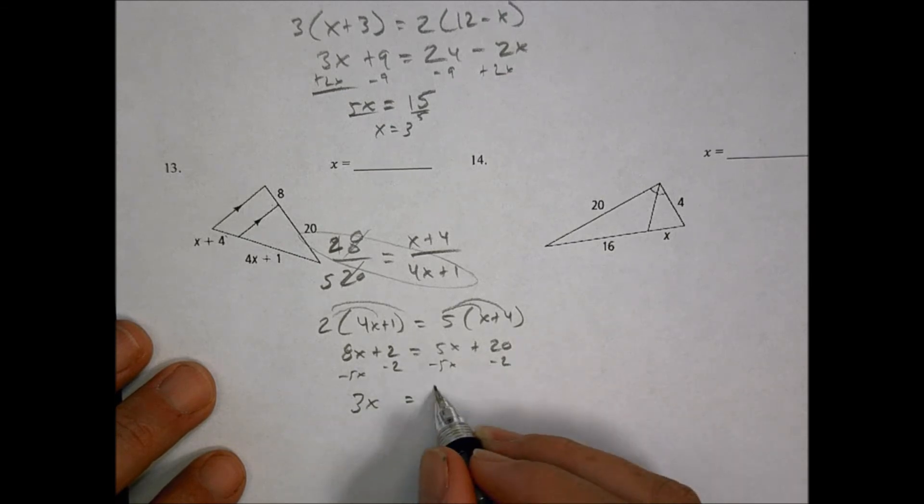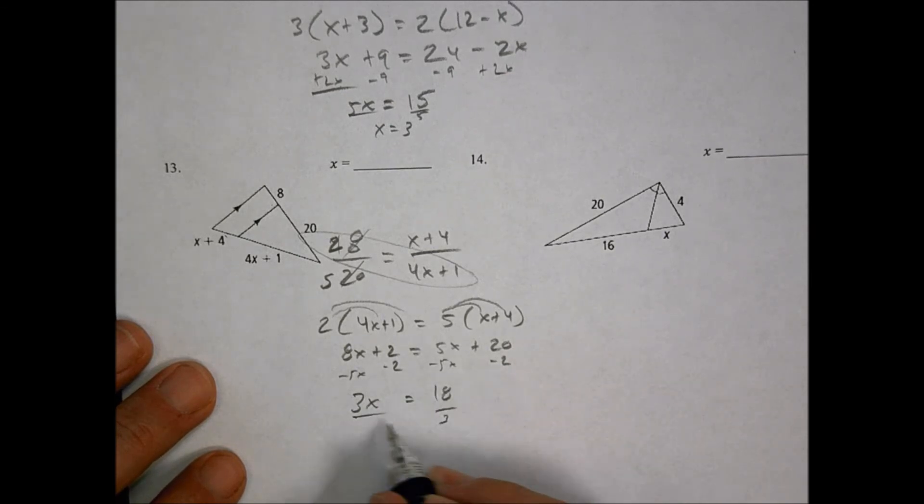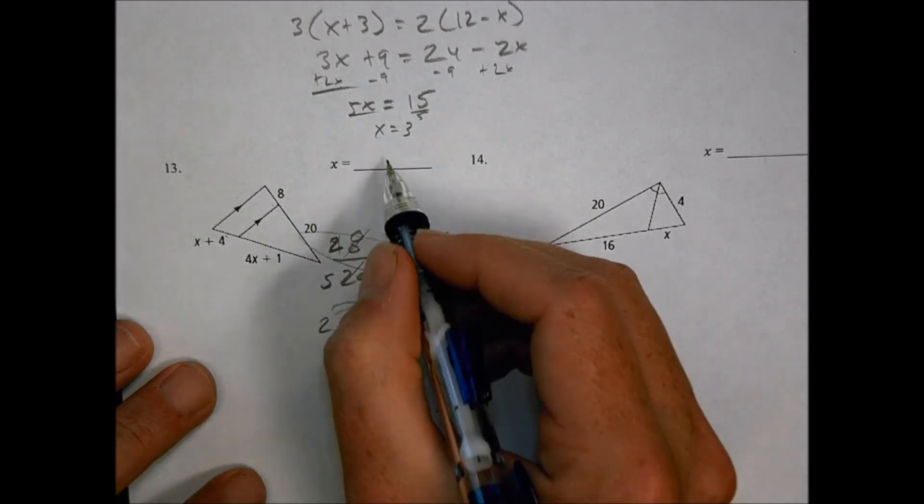Subtract 5x, subtract 5x. We're left with 3x over here. Subtract 2, subtract 2. We're left with 18 over there. Divide both sides by 3, and x is equal to 18 divided by 3, which is 6.